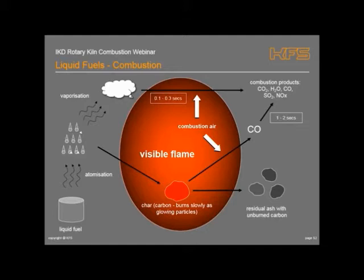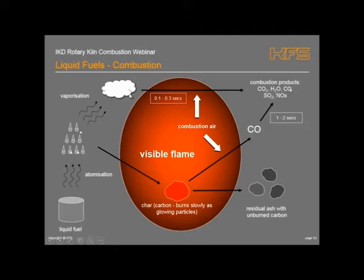You take liquid fuel, you atomize it into droplets, the droplets vaporize at the surface, and it's the vapor at the surface which carries out the combustion as oxygen diffuses into the droplet, burns, and then CO2 and steam go out, releasing more area for vaporization of the fuel and oxygen to come in and continue the reaction. The vapor combusts through to products: CO2, steam, hopefully not too much CO, SO2 from sulfur compounds, and some NOx.